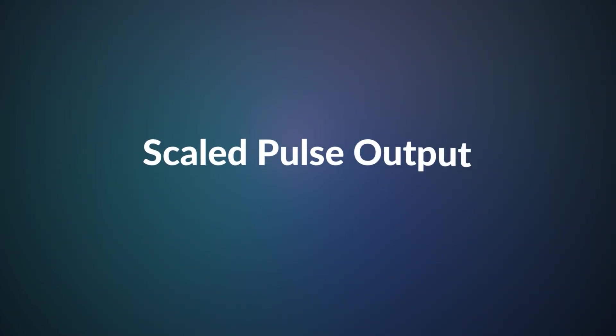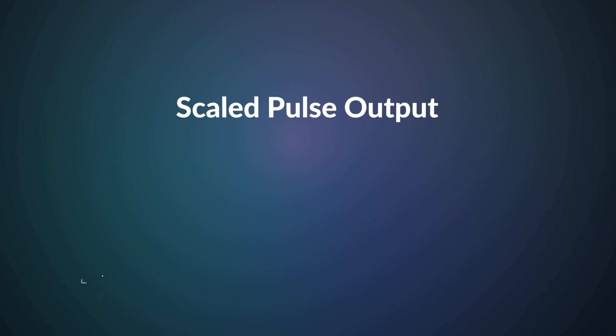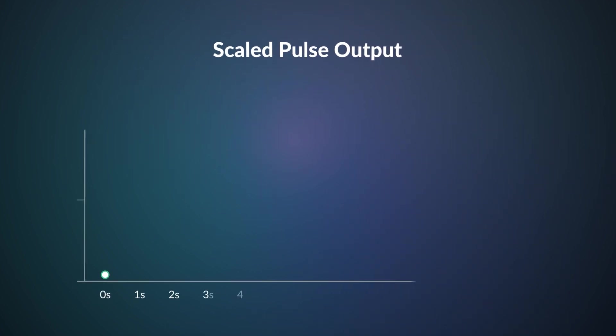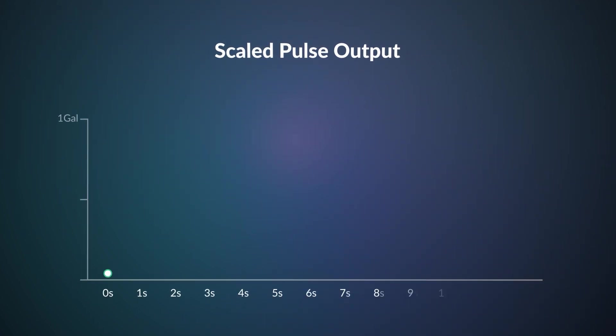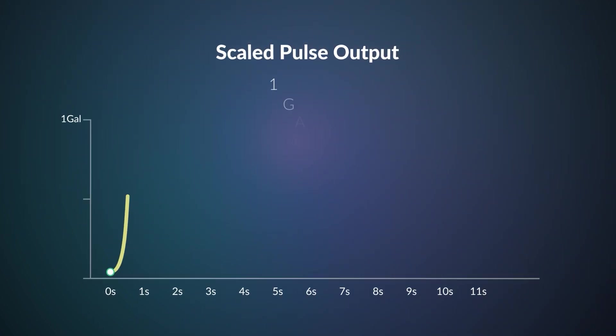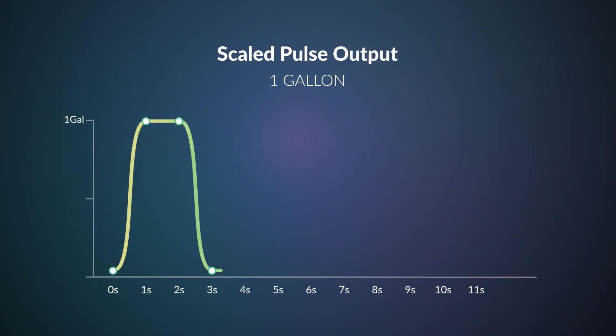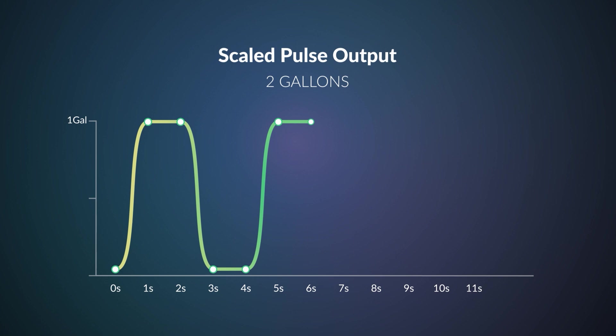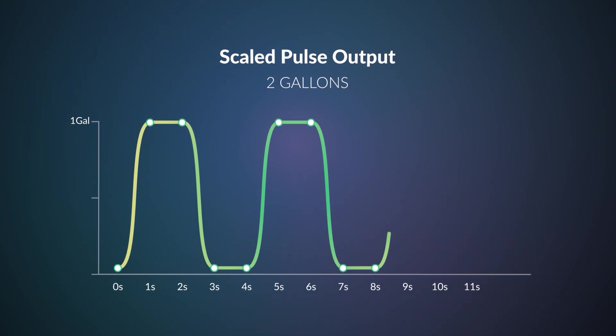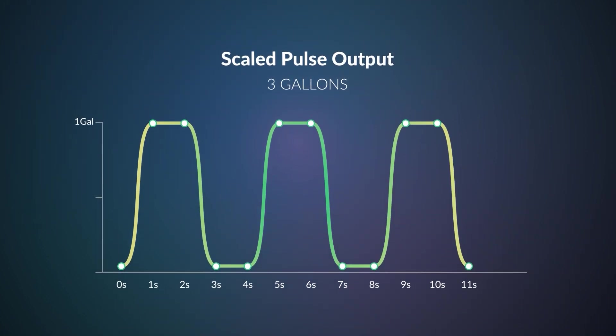Meters with digital pulse outputs can also be configured to output pulses for each unit of predetermined volume recorded by the meter, known as scaled pulses.